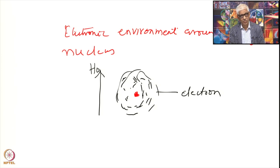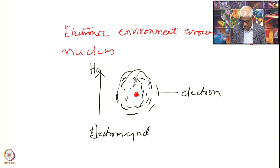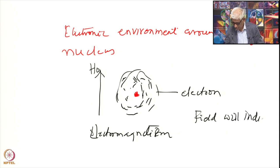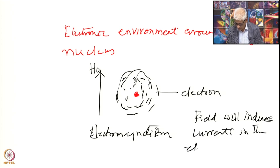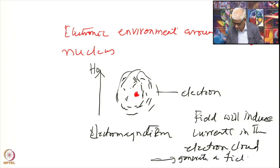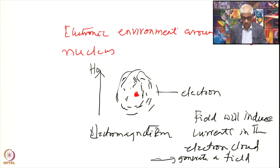What is the response of the electron cloud? From electromagnetism we know Lenz's law: if you apply a field, it will induce currents in the electron cloud. When there is a current flowing, it will produce a magnetic field. This induced field will tend to oppose the externally applied magnetic field.